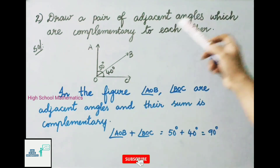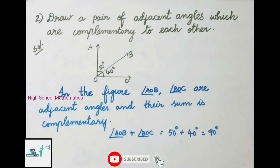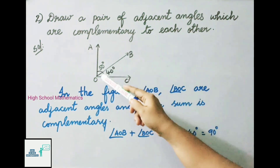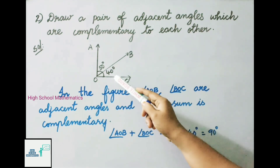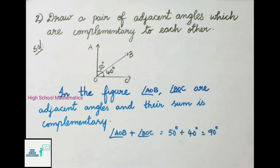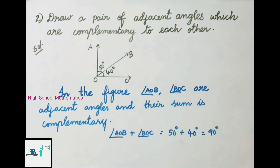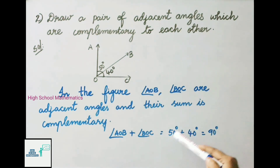Question number two: draw a pair of adjacent angles which are complementary to each other. In the solution, we have drawn angle AOB equal to 50 degrees and angle BOC equal to 40 degrees. The sum of these two angles is 90 degrees, which is complementary. So angle AOB and angle BOC are adjacent angles and their sum is complementary.